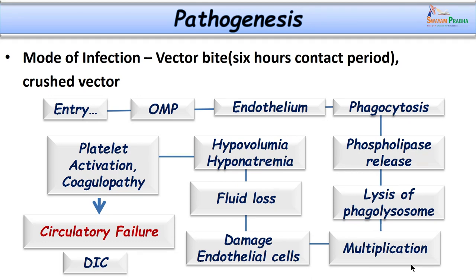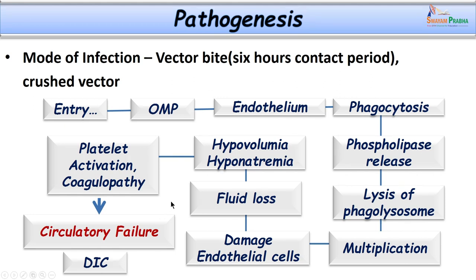Sometimes the mode of infection is through crushing of feces on minor abrasions produced by the bite of these vectors. Once organisms enter the skin they get into circulation, bind to receptors on the vascular endothelial surface and are phagocytosed. Inside the phagosome they release phospholipase, causing lysis of the phagolysosome, escape into the cytoplasm, multiply, and then bind to actin filaments to move through the cell membrane to the next cell. This ultimately results in endothelial damage, fluid loss, hypovolemia, hyponatremia, circulatory failure and DIC — the main reason for high case fatalities when the disease remains untreated.